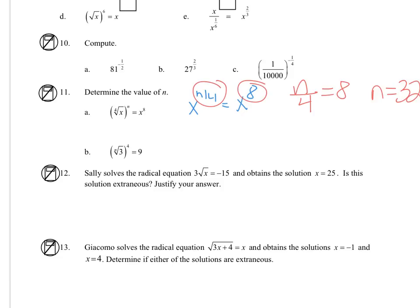And then for b, I'm going to rewrite 9 as 3 squared. Now that the bases are the same, we can solve that. I'm going to multiply n to the right, divide by 2, so n is 2.